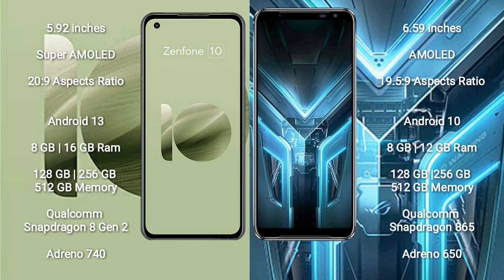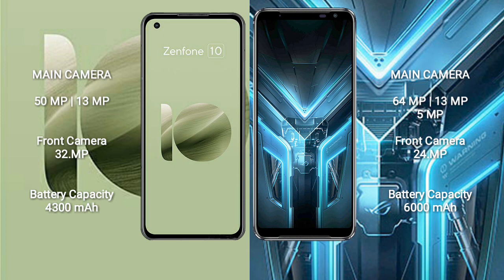Asus ROG Phone 3 comes with 8GB, 12GB, and 16GB RAM options, and 128GB, 256GB, and 512GB internal storage, with a Qualcomm Snapdragon 865 Plus processor and Adreno 650 GPU. Asus Zenfone 10 features a rear dual-camera setup of 50MP plus 13MP, and a front camera of 32MP.